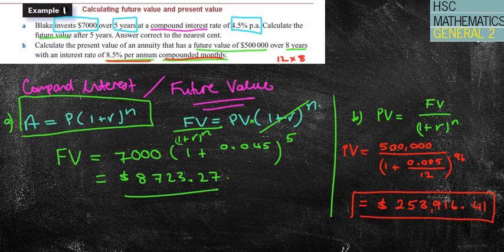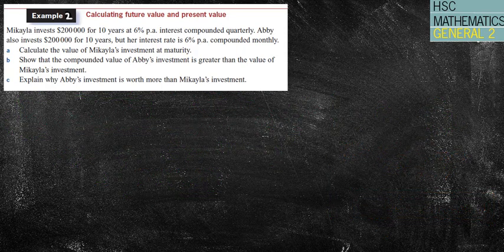Well, it means that if I want to have a future value of $500,000, I need to invest $253,916 today in order for that to happen. So my present value is $250,000 thereabouts. I hope that made sense.